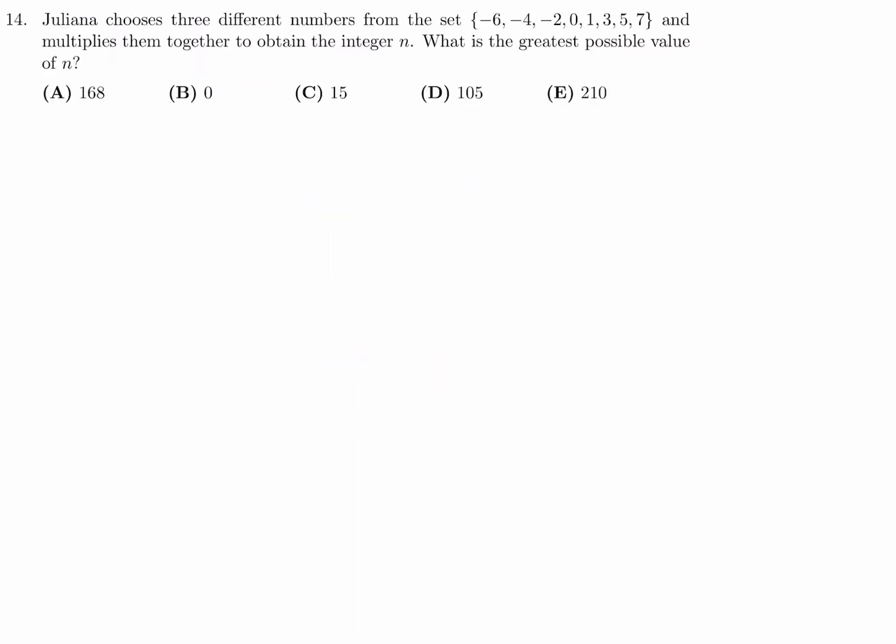Juliana chooses 3 different numbers from the set and multiplies them together to obtain integer N. What is the greatest possible value? Well, the obvious would be to choose the 3 biggest numbers: 3 times 5 times 7, and when you do, you get 105, and 105 is one of the answer choices. But please wait. Take 5 seconds to look at the set again.